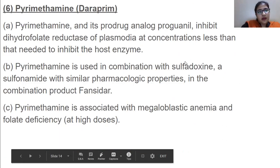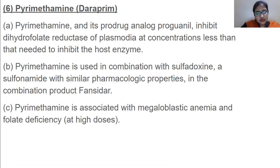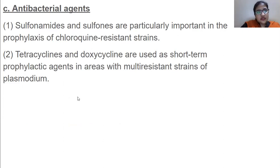Pyrimethamine and its prodrug analog proguanil inhibit dihydrofolate reductase of Plasmodia at concentrations less than that needed to inhibit the host enzyme. It is used in combination with sulfadoxine, a sulfonamide with similar pharmacological properties, in the combination drug Fansidar. Pyrimethamine is associated with megaloblastic anemia and folate deficiency at higher doses. Antibacterial agents such as sulfonamides are particularly important in the prophylaxis of chloroquine-resistant strains. Tetracyclines and doxycycline are used as short-term prophylactic agents in areas with multidrug-resistant strains of Plasmodium.